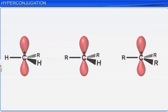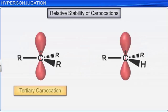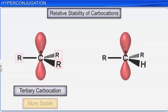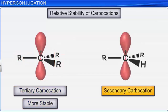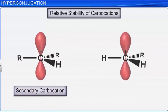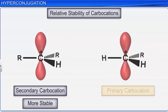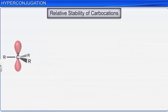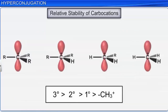Hence, the tertiary carbocation, in which there are three alkyl groups attached to the positive carbon, is more stable than a secondary carbocation with two alkyl groups. Similarly, a secondary carbocation is more stable than a primary carbocation. Therefore, the order of stability decreases from tertiary carbocation to methyl cation.